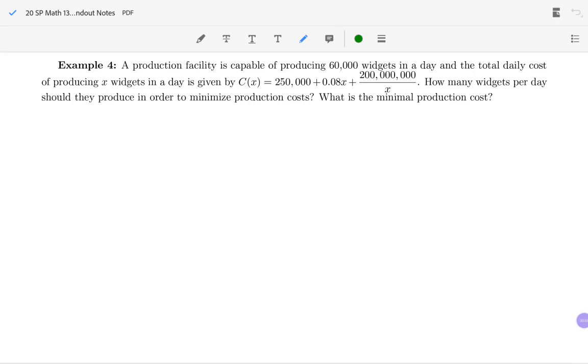A production facility is capable of producing 60,000 widgets in a day, and their total daily cost of producing x widgets on any given day is given by C(x), the total cost function, which is 250,000 plus 0.08x plus 200 million over x. How many widgets per day should they produce in order to minimize production costs?